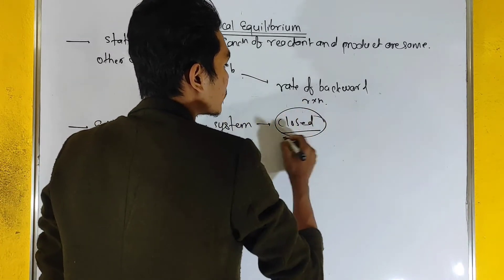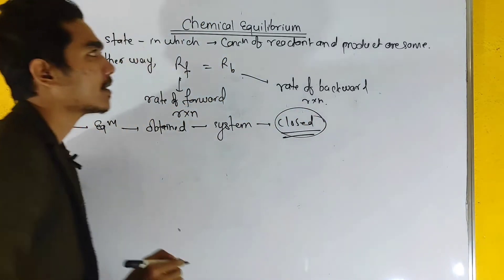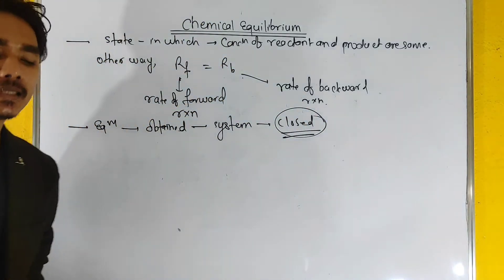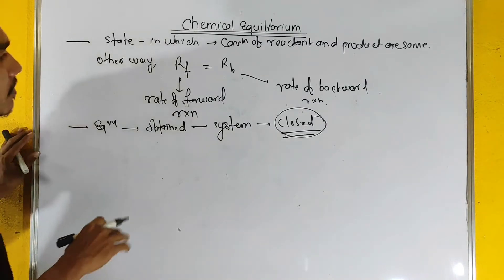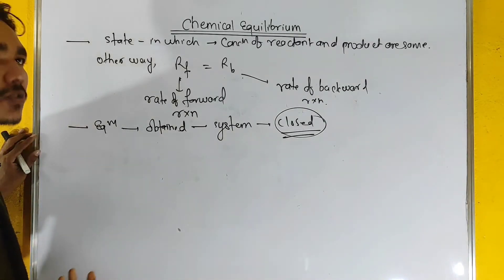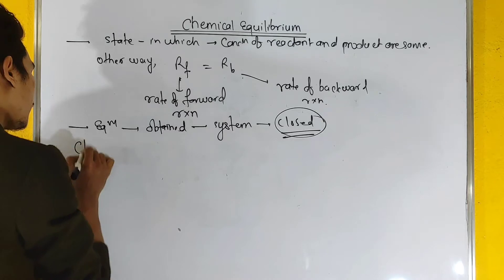In an open system, we can maintain the equilibrium. Now we will discuss the classifications of equilibrium.